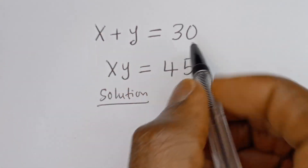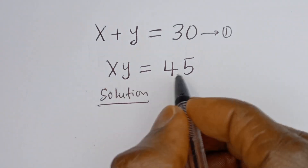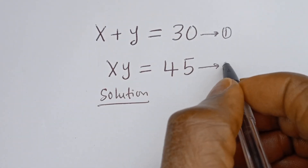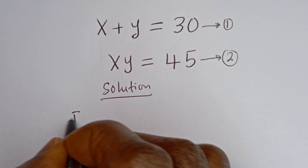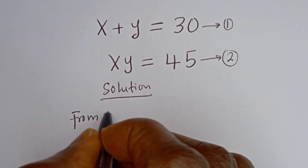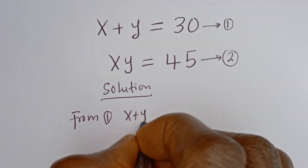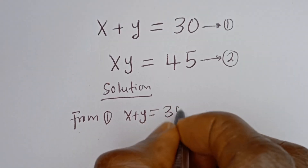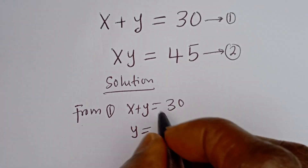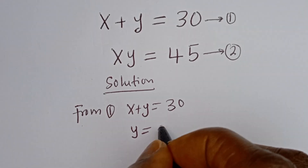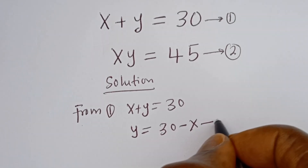x plus y is equal to 30 — let's call this equation 1. x times y is equal to 45 — let's call this equation 2. Then from equation 1, x plus y is equal to 30, so y is equal to 30 minus x. Let's call this equation 3.